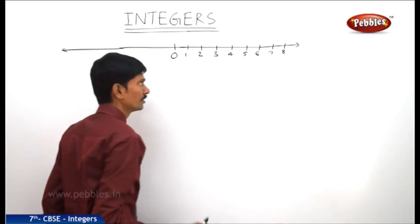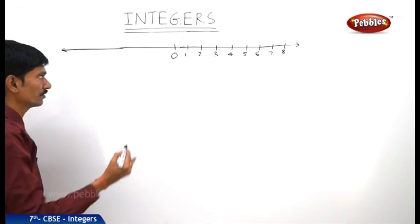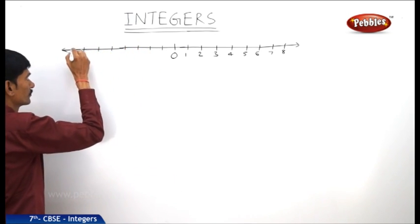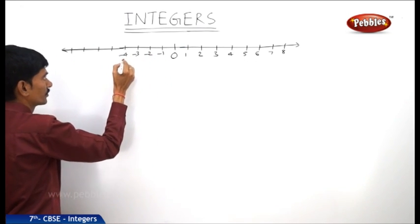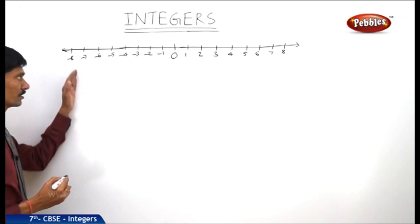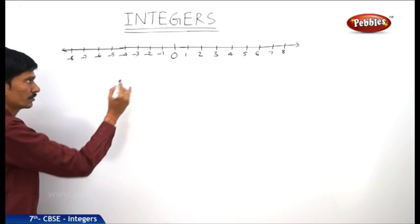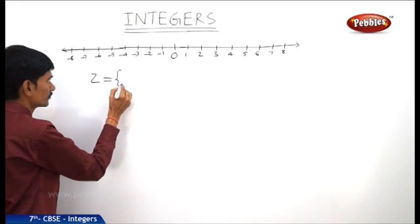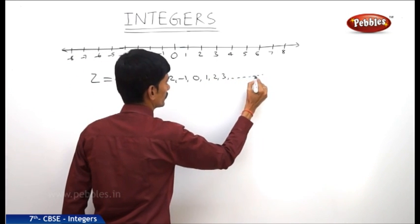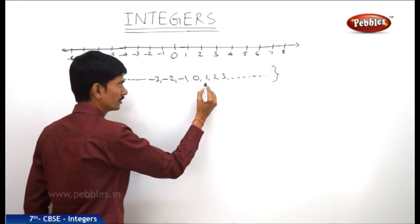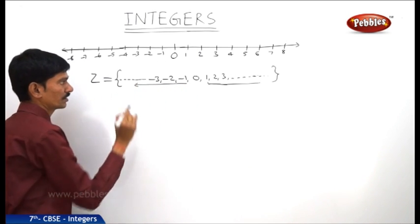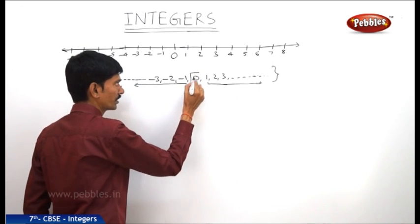The arrow on the right represents that there are infinitely many positive integers to the right of 0. On the left side of 0, we represent the negative integers: minus 1, minus 2, minus 3, minus 4, minus 5, minus 6, minus 7, minus 8 and so on. The arrow on the left represents that there are indefinitely many negative integers to the left of 0. So we can write Z as: ..., minus 3, minus 2, minus 1, 0, 1, 2, 3, ... Here 1, 2, 3 are positive integers; minus 1, minus 2, minus 3 are negative integers; and 0 is neither positive nor negative.